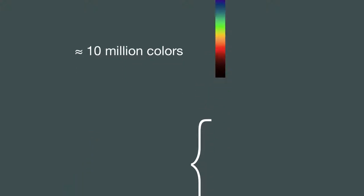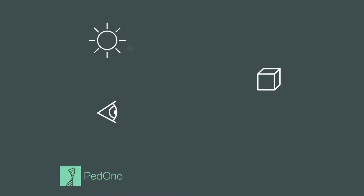Let's imagine a simple scene with a light source, an object, and a viewer. The light source will emit photons that move across space and interact with objects. If an object is visible to the viewer, some photons will bounce off the object and be reflected into the viewer's eye. If the object is a red box, the box will absorb light that appears blue or green, while light at wavelengths that appear red will be reflected into the viewer's eye.